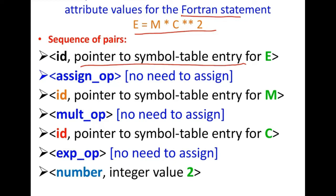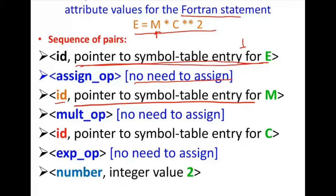So the sequence of pairs — if you see, id points to the symbol table so you understand where this is stored. If it is the first row, this red underlined thing will be replaced by one, so it's id comma one. Then the equal-to sign is there; in the symbol table it is the assignment operator and will be entered, no need to assign anything right now. Then it is finding 'm' — id points to the symbol table for m, so it is the third row, so it is id comma 3.